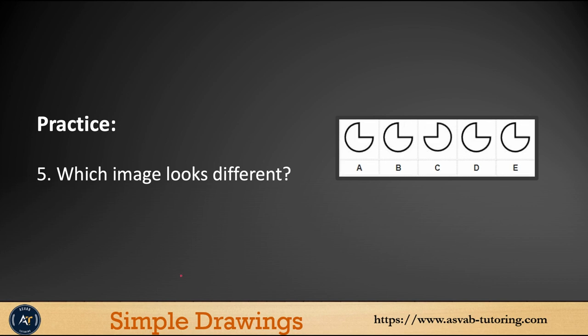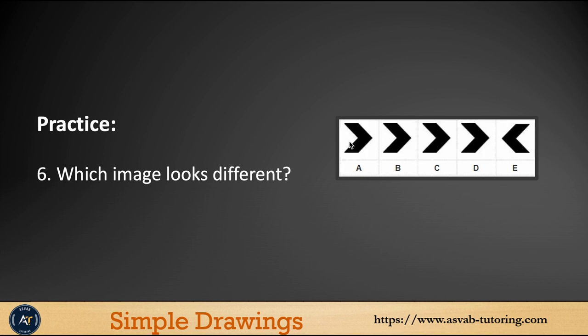The next one — try by yourself. You could see all of them are three-quarters of a circle, but the orientations are the same except one. For the following question, all of them look like an arrow going from left to right, but one of them is different. Try by yourself and see what the correct answer is.